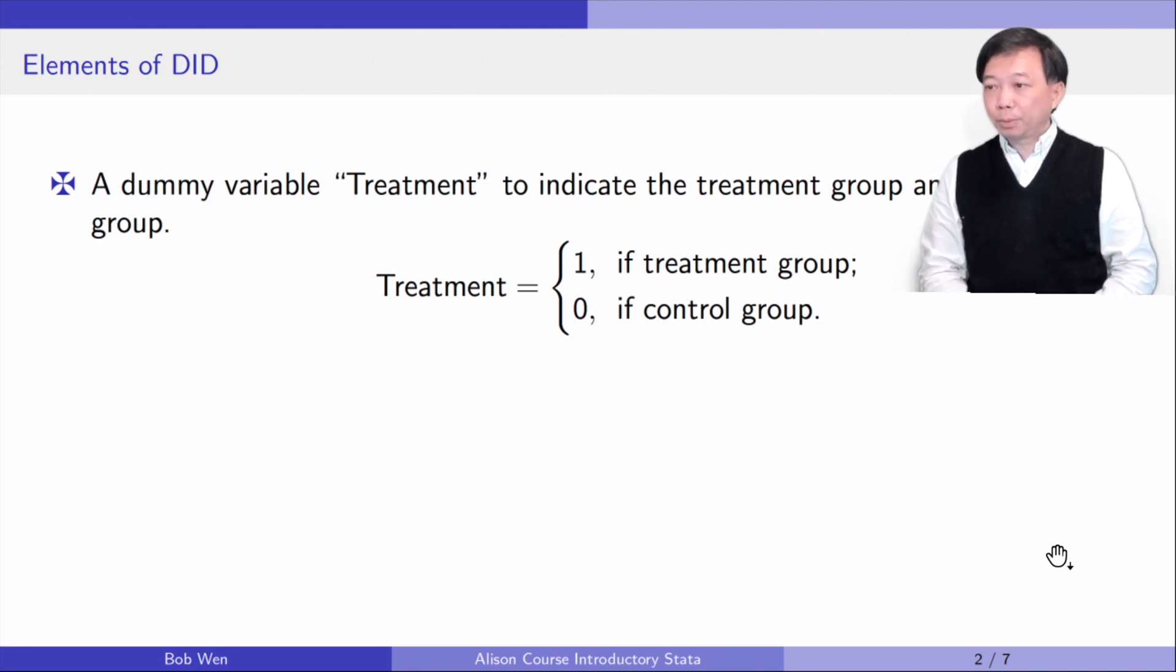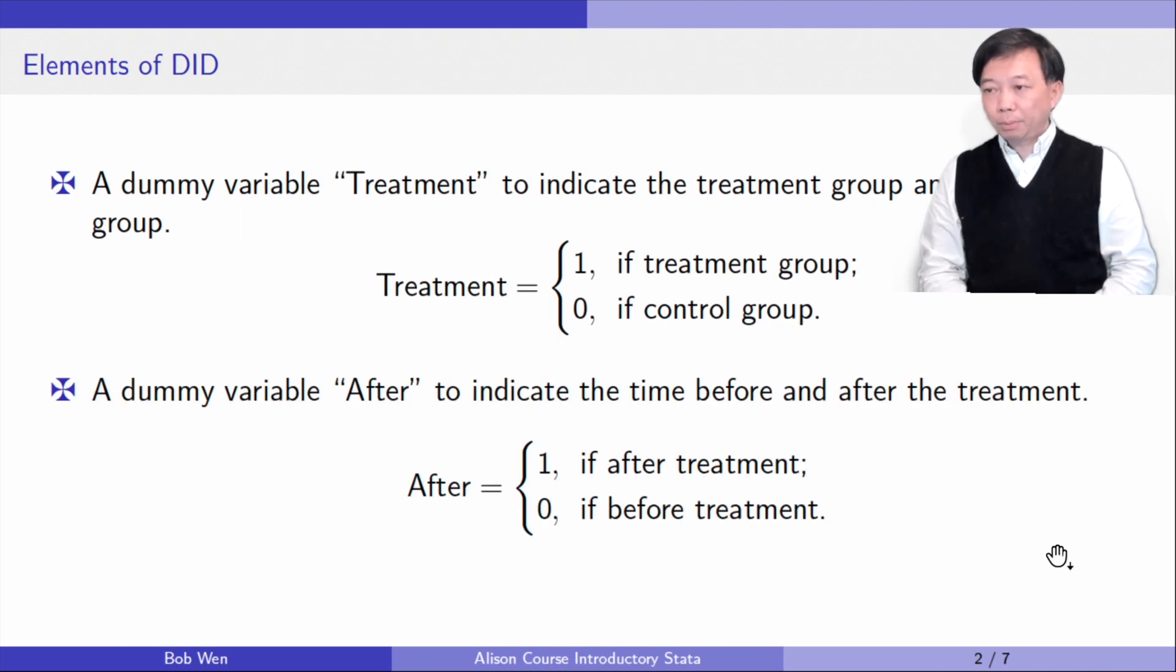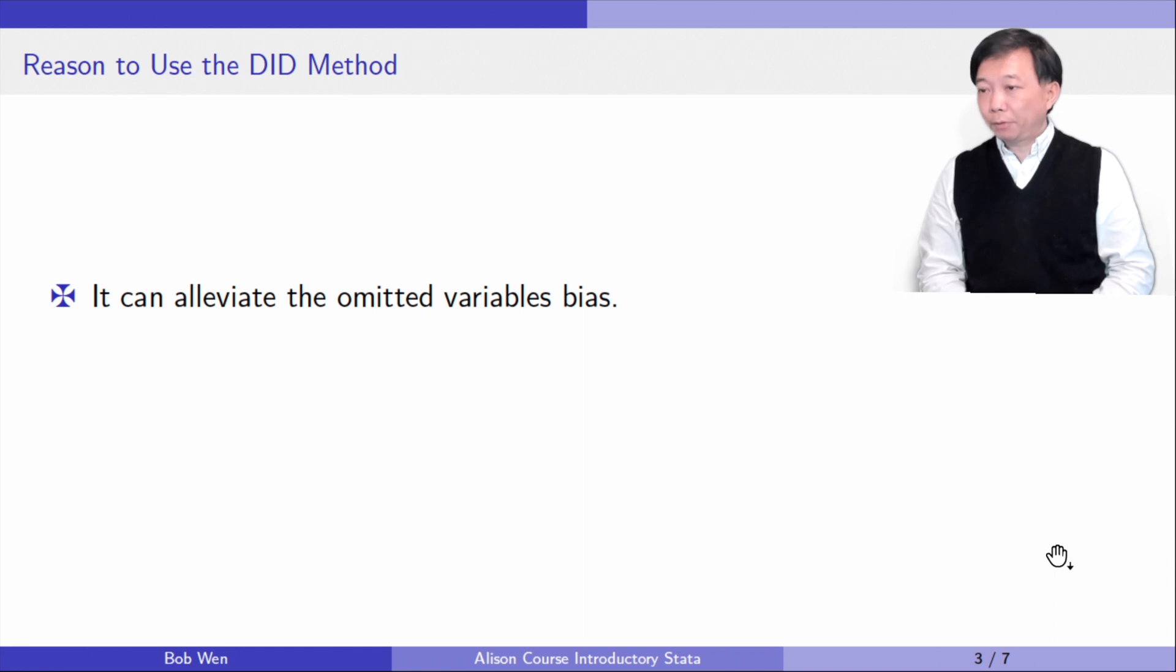In addition to two groups of people, we have two time periods. The treatment occurs in between the two time periods. In other words, we have observations before the treatment and after the treatment. To figure out the treatment effect, we compare the outcomes, such as health, wage, or employment rate, between the treatment group and the control group before and after the treatment.